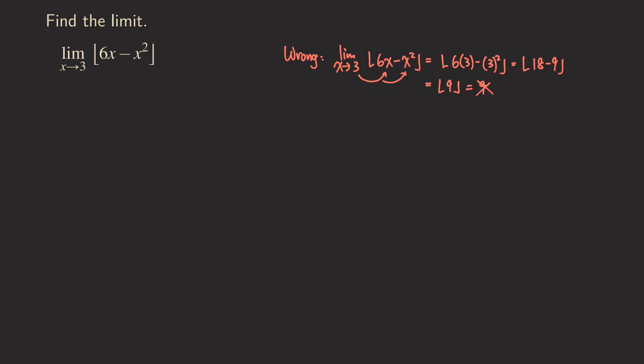We don't want this answer. The reason it's wrong is that if you graph this function on decimals, you will see the answer is actually not nine. How do we do this problem? One way to try is that we can factor this function — the 6x minus x squared — and see what happens. But that also is an approach that doesn't really work.